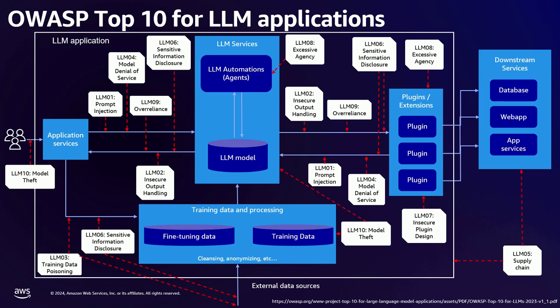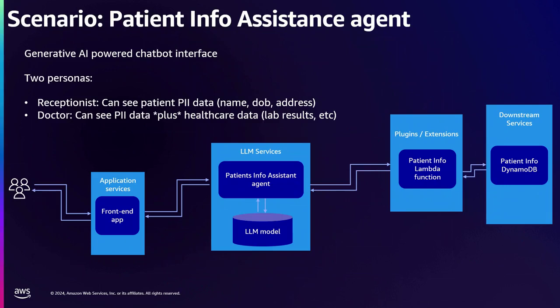We came here to talk about how we can address these issues, so we're going to introduce our scenario for today: a patient information assistance agent. You can see the same four main boxes from the previous notional diagram, including application services, LLM services, the plugins and extensions, and of course the downstream services which include all that patient information needed to make the entire process run.